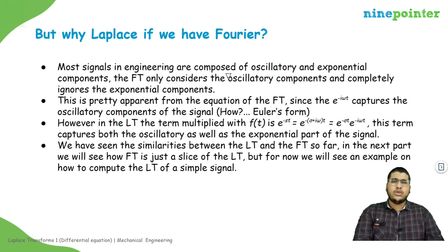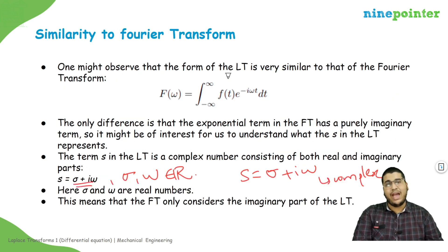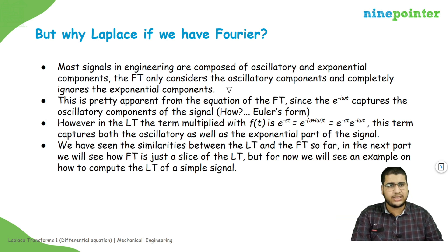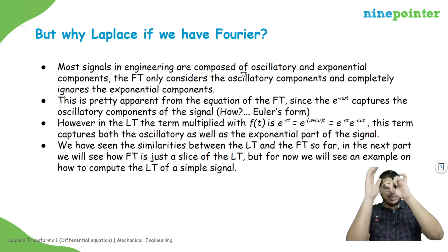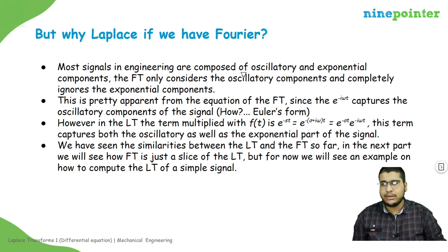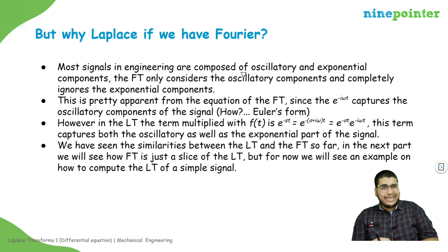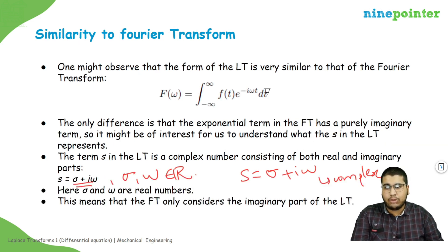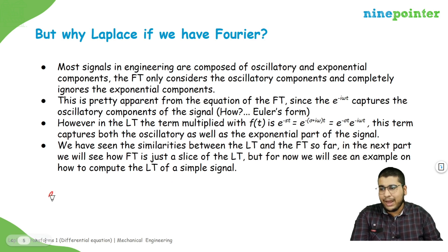Now let's look at why we need the Laplace transform if we already have the Fourier transform. Most engineering signals are composed of both an oscillatory as well as an exponential component — they may oscillate and grow or decay over time, because not everything is perfect. The oscillatory part is captured by the Fourier transform, since e to the minus iota omega t can be expanded as sine and cosine terms.